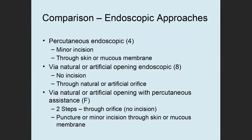Let's do some comparisons of different approaches that include an endoscope. Percutaneous endoscopic requires a minor incision; natural or artificial opening endoscopic requires no incision. Value F is the two-step: percutaneous endoscopic is through the skin with a minor incision, natural or artificial opening endoscopic is through an orifice with no incision, and value F combines both an orifice and a minor incision.